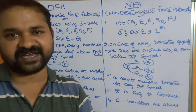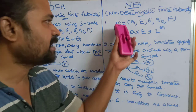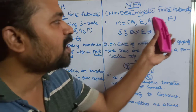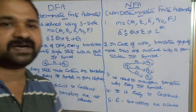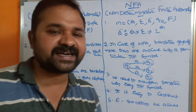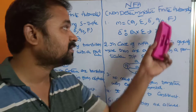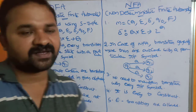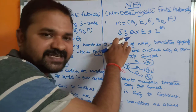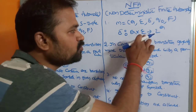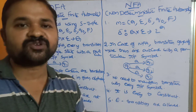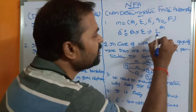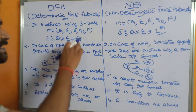Now let us see how we define NFA. NFA is also defined using a five-tuple M = (Q, Σ, δ, q₀, F), where Q, Σ, q₀, and F are similar to DFA. The difference is delta: for NFA, delta is a transition function which maps from Q × Σ to 2^Q. That means if we apply an input symbol on Q, we can move to 2^Q possible states, whereas in DFA we move to only one state.